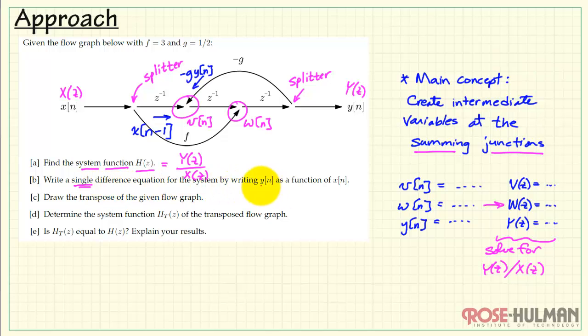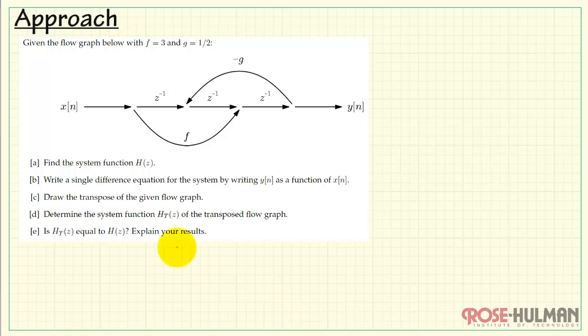Now in part b, we're wanting to write a single difference equation for the entire system. Once we have the system function, we're pretty much set. We want to write out y of z multiplied by some collection of coefficients and powers of z inverse, similar for x of z, and then when we do the inverse transform, we will be able to write out y of n and its delayed versions. Then we would have x of n and its delayed versions, and you simply put everything on the right hand side.